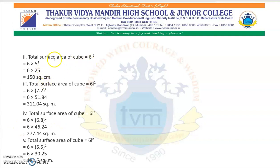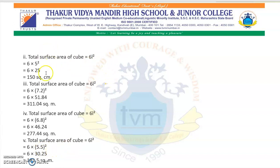Same way, total surface area of a cube = 6L². For length = 5 cm: 6 × 5² = 6 × 25 = 150 cm². Similarly, find the surface area for lengths 7.2, 6.8, and 5.5 by substituting the values into the formula.